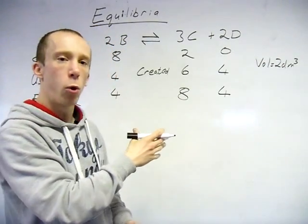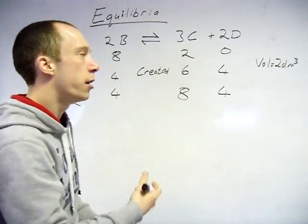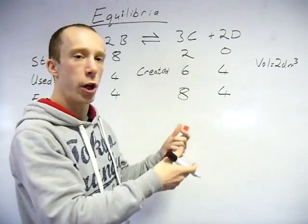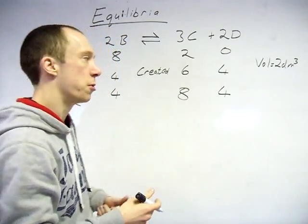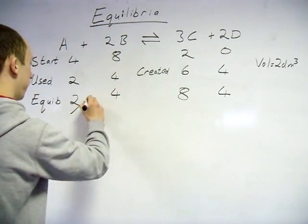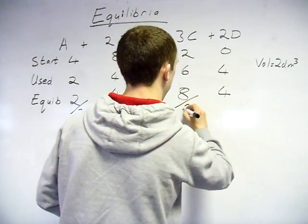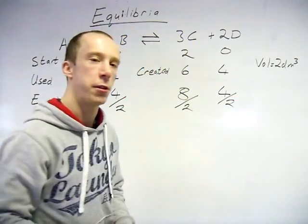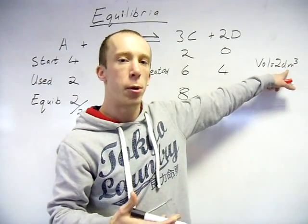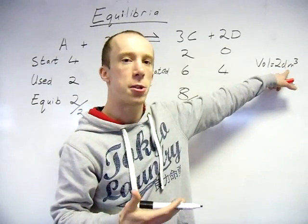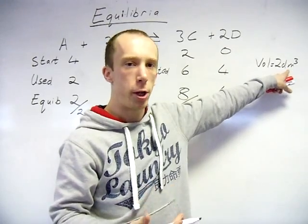So those are moles — we need concentrations to go into our equation. You should be able to work out how moles and volume give concentration. So just divide them all by the volume. Keep an eye on the unit: it must be in decimetres cubed. If you have metres cubed or centimetres cubed, convert it.